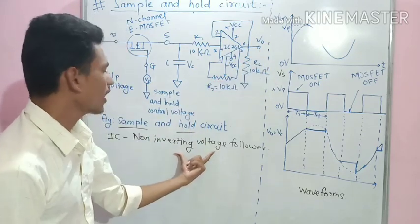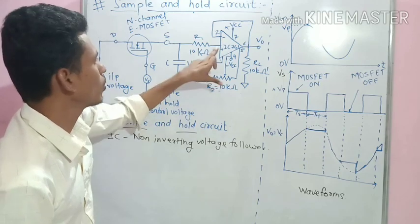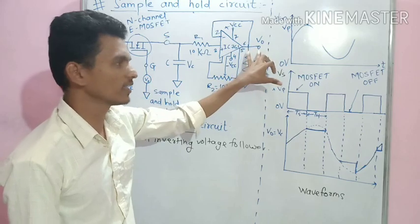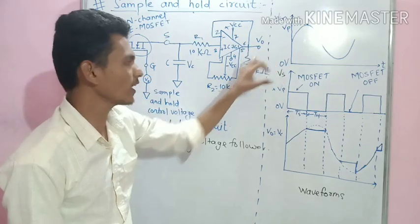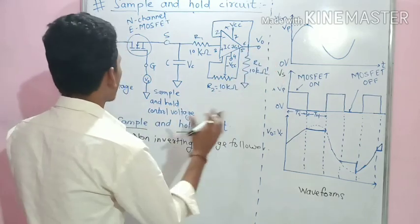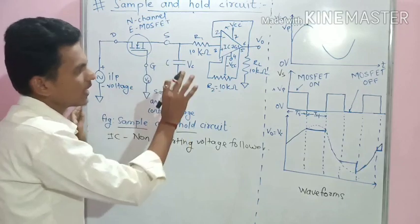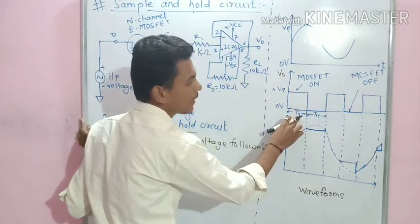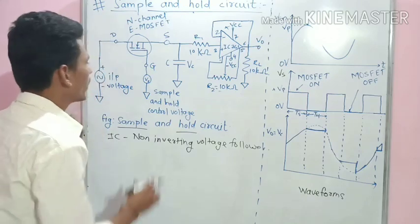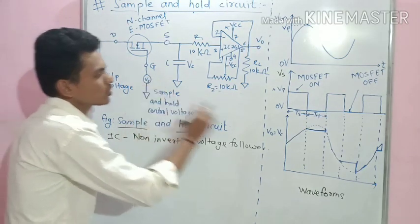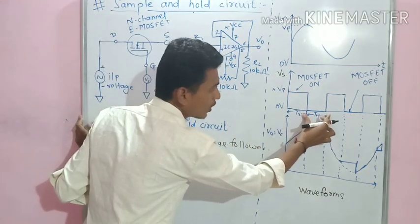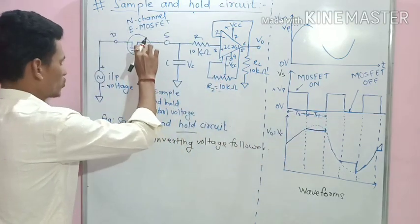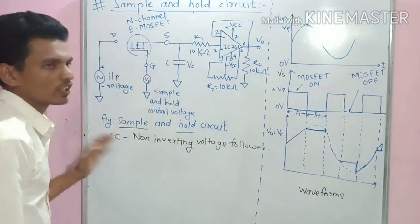The same voltage appears at the non-inverting terminal of the operational amplifier, and the same voltage we get at the output. This is the sample time — the period during which the signal is being sampled.